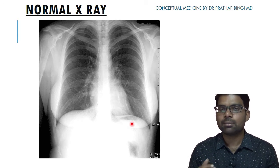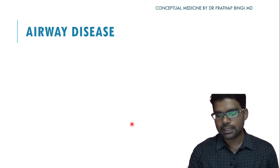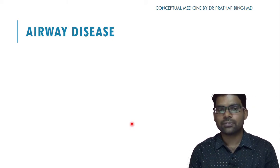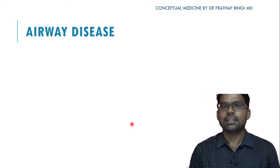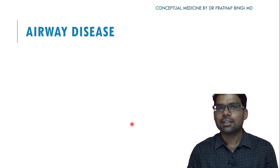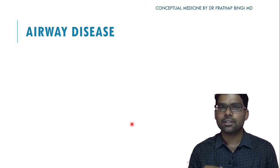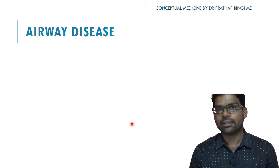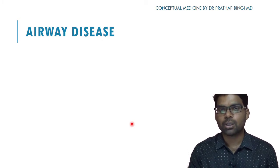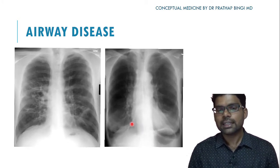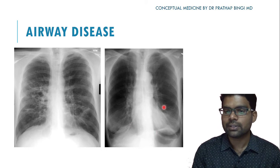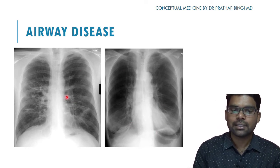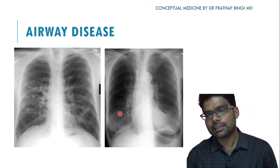Now let us discuss important respiratory conditions diagnosable on X-ray. The first category is airway diseases, which include asthma, COPD (comprising chronic bronchitis and emphysema), and bronchiectasis. The X-rays here show two important airway diseases: COPD on the right and bronchiectasis on the left.